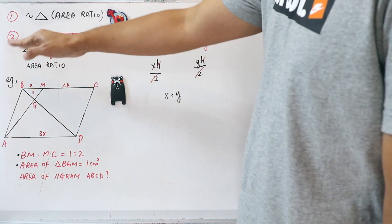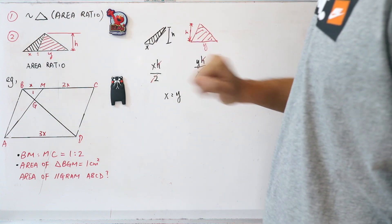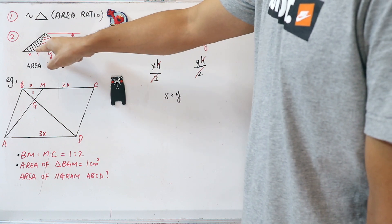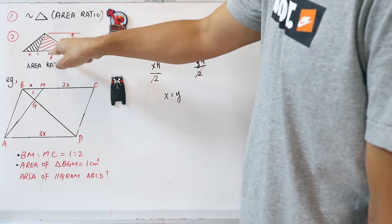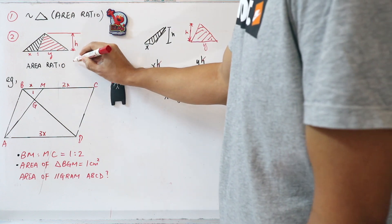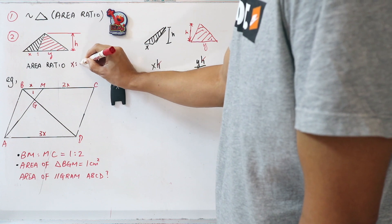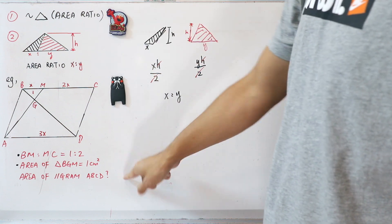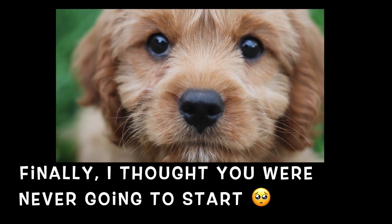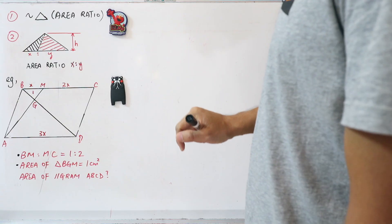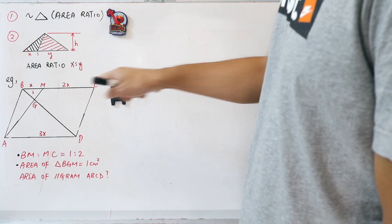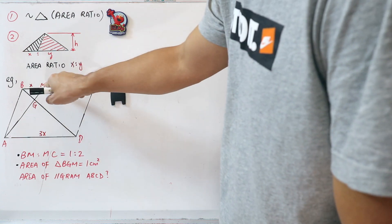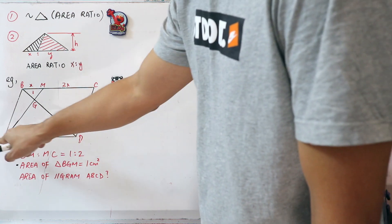So the conclusion of this second point is: if the ratio of the base of the black shaded triangle to the base of the red shaded triangle is x to y, then the area ratio is also x to y. After understanding these two important points, we can go ahead and answer this question. Looking at the figure, it's not too hard to see that triangle BMG and triangle DAG are similar.